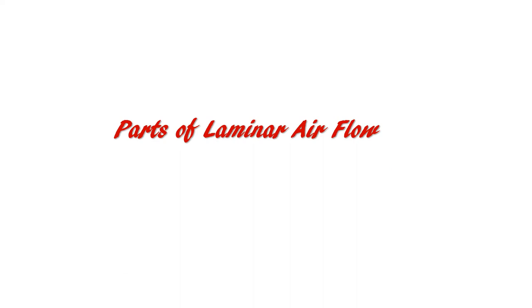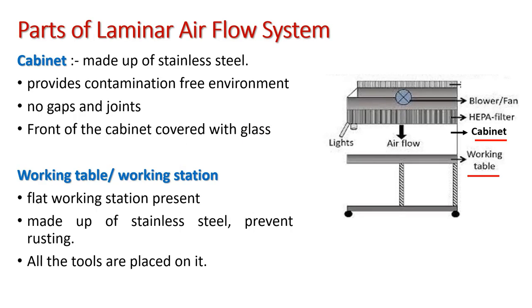Parts of laminar airflow. The first part is the cabinet. This enclosed cabinet is made up of stainless steel; it provides a contamination-free environment. Inside the cabinet there are no gaps and joints, which prevent accumulation of spores. The front of this cabinet is covered with a glass shield which can be opened completely or partially, helping the user to work inside.